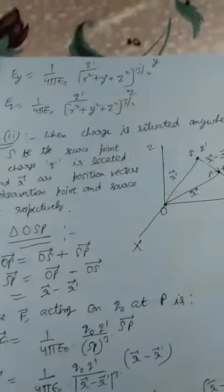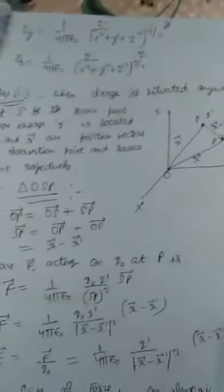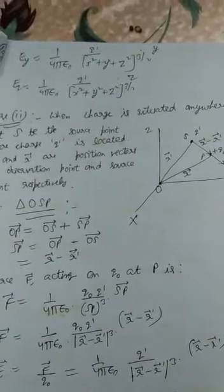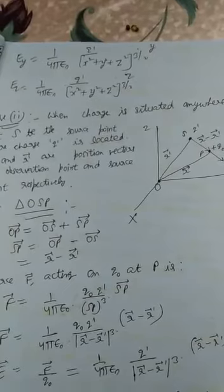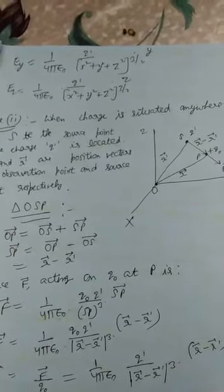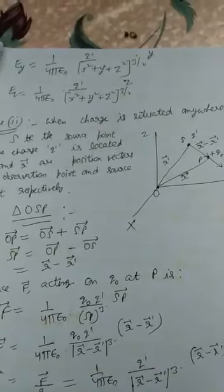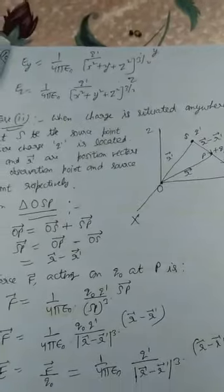Then in triangle O, P and S, we have OP vector is equal to OS vector plus SP vector. Then SP vector is equal to OP vector minus OS vector, which is equal to R vector minus R' vector.